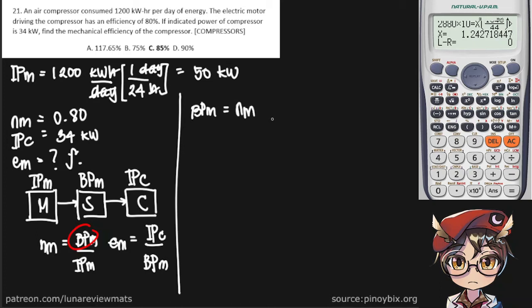Multiplying the electric motor efficiency by the IPM, that's 0.8 times 50 kilowatts. Our BPM would be 40 kilowatts.